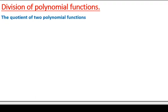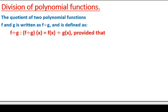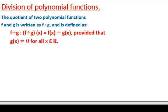Let's see the definition of division of polynomial functions and do one example. The quotient of any two polynomial functions f and g is written as f divided by g, and is defined as f divided by g of x, which is equal to f of x divided by g of x, provided that g of x is different from zero. The polynomial functions we are considering at this level are polynomial functions over the real numbers.